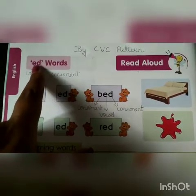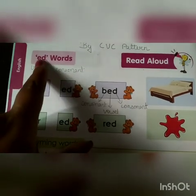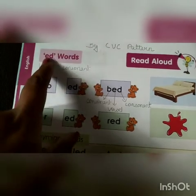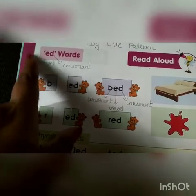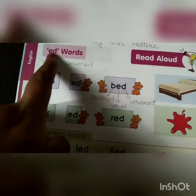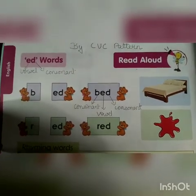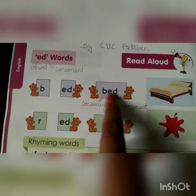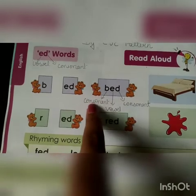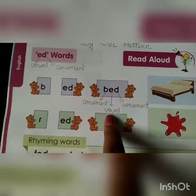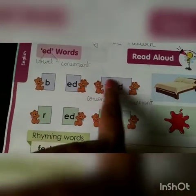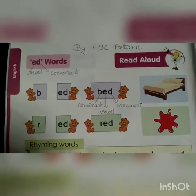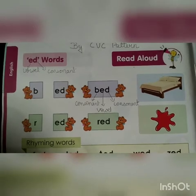ED is a 2-letter cluster word and this is the VC pattern — E is vowel and D is consonant. Now we will add one consonant before the vowel E to make a 3-letter cluster word. See here: B is a consonant. B plus ED is equal to BED. B is a consonant, E is a vowel, D is a consonant — this is the CVC pattern. By the CVC pattern we have made the 3-letter cluster word BED.